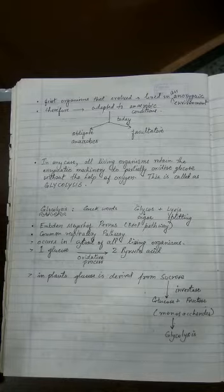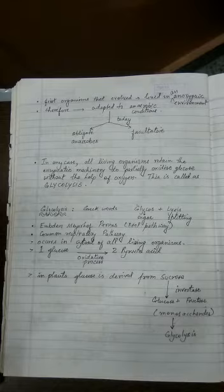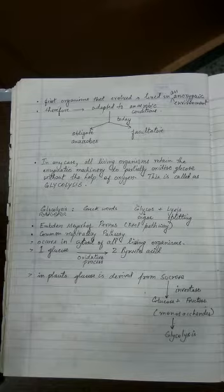Now remember that it is an oxidative process in which glucose is broken down into two molecules of pyruvic acid and it is common to both aerobic as well as anaerobic respiration. And glycolysis always occurs in the cytosol or you can say the cytoplasm of all living organisms.